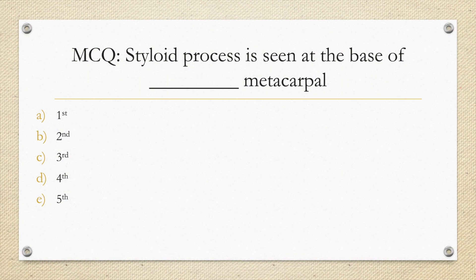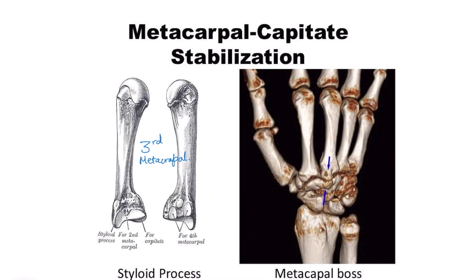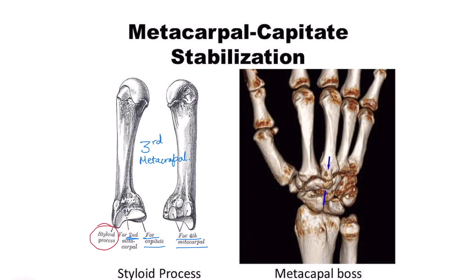The styloid process is seen at the base of the third metacarpal. This third metacarpal has a facet for articulation with the second metacarpal and also for the capitate below, and on the medial side with the fourth metacarpal. Notably, it has a styloid process present at the base of the third metacarpal on its dorsal surface, directed laterally.